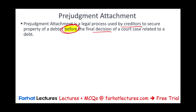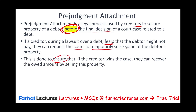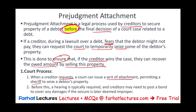The creditor is getting nervous — they want to make sure they get that property. If the creditor, during a lawsuit over debt, fears that the debtor may not pay, they can request the court to temporarily seize some of the debtor's property. This is done to insure that if the creditor wins the case, they can recover the amount owed by selling that property. When a creditor requests a pre-judgment, the court can issue a writ of attachment permitting a sheriff to seize the debtor's property. There's a hearing where the creditor must show proof that the fear is real, and creditors may need to post a bond to cover any damages if the seizure is later deemed improper.